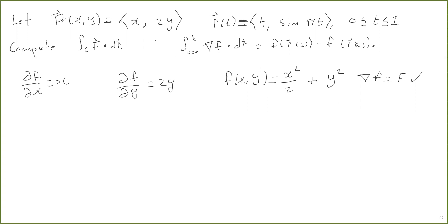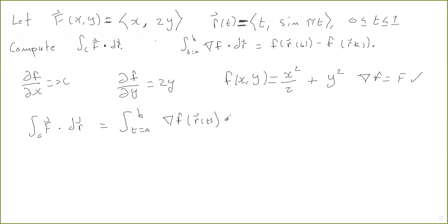This tells us that big F is conservative, and the potential function is little f — so big F equals the gradient of little f. So the line integral of F over this curve, by definition, is the integral from t equals a to b of the gradient of f evaluated at r(t) dotted with dr, and by the fundamental theorem of line integrals this is just f of r(b) minus f of r(a). In this particular problem we know b equals 1 and a equals 0.